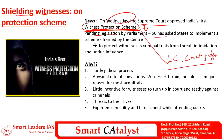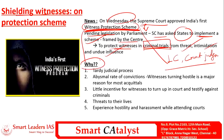The Supreme Court has asked state governments to implement the scheme. The main objective is ensuring protection of witnesses in criminal trials from threat, intimidation and undue influence. The need arises because our judicial process is very slow, conviction rate is very low, and the acquittal rate is very high — because witnesses are actually threatened.